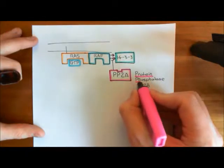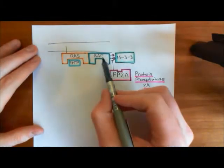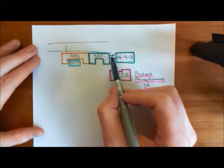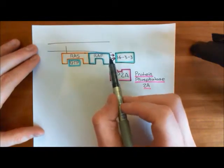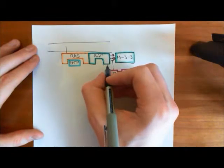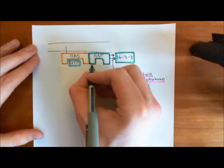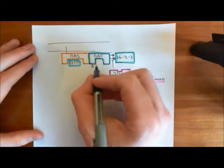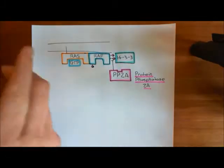The removal of those inhibitory phosphate groups means that the 14-3-3 protein cleaves away from the RAF kinase enzyme. But that's not the only step in the activation of RAF kinases — you don't just remove the inhibitory phosphate groups and it's active; the activation is very complicated. What then happens is RAF gets phosphorylated on activatory phosphorylation sites, specifically on tyrosine residues, and there are multiple of these.